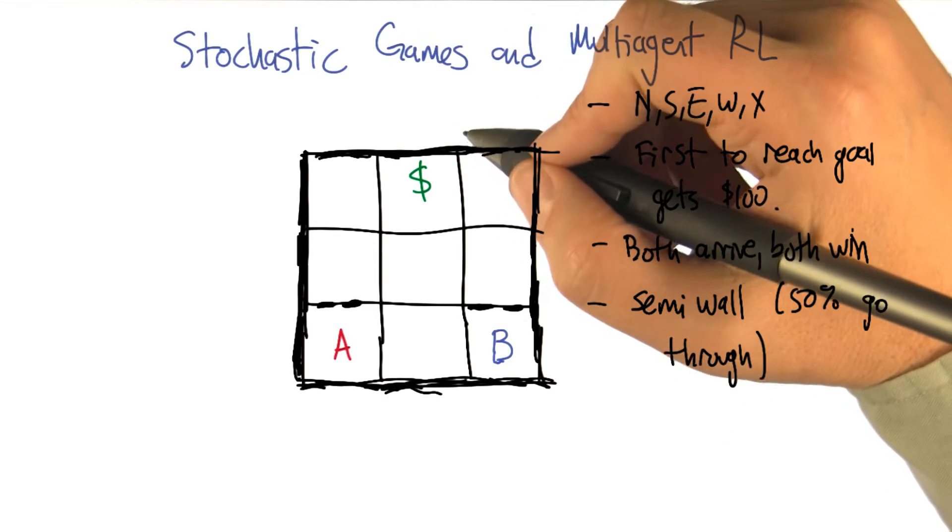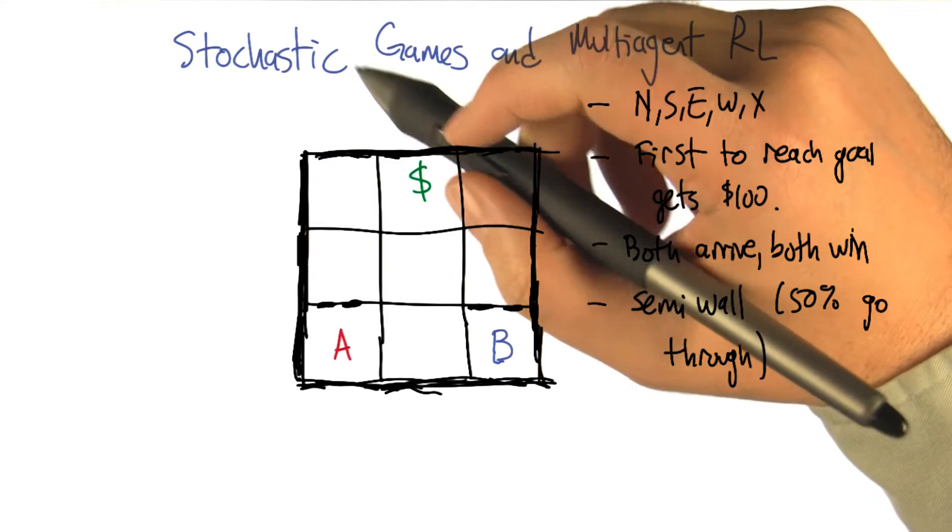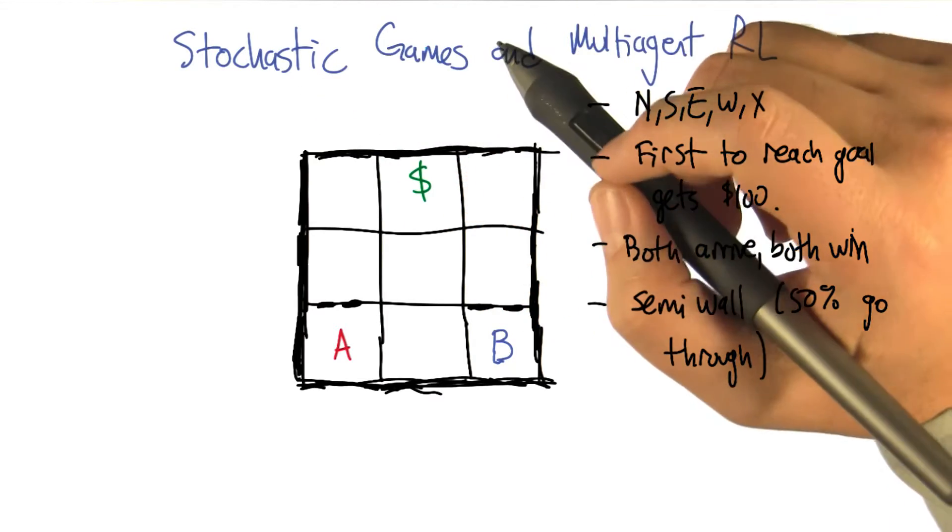What I'd like to tell you about is a generalization of both MDPs and repeated games that goes by the name stochastic games, also sometimes called Markov games.